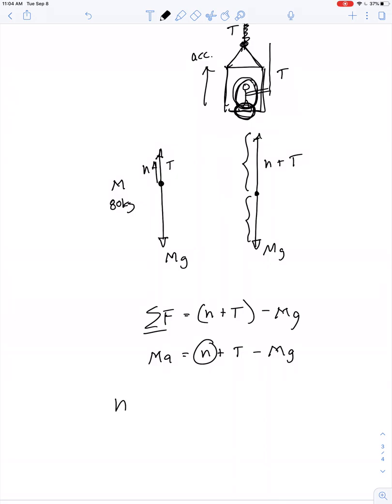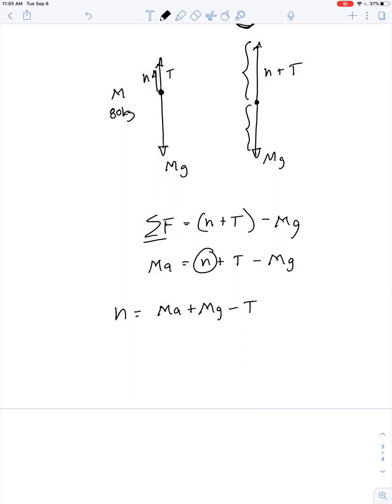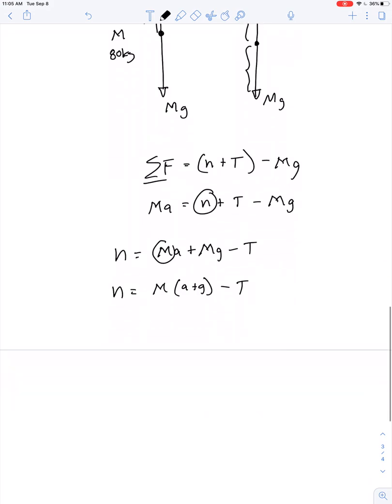We're trying to solve for this normal force. So the normal force is equal to MA plus Mg minus T. We could factor out the capital M. So it's capital M times the quantity A plus g all minus T.